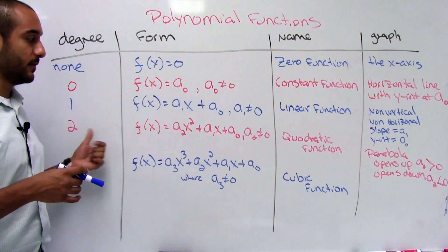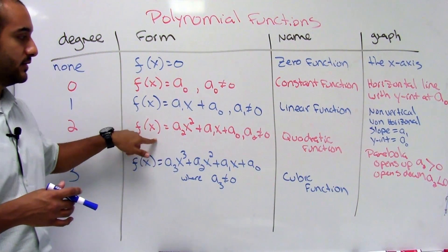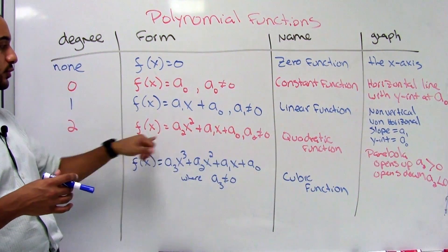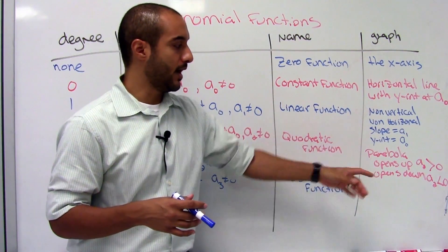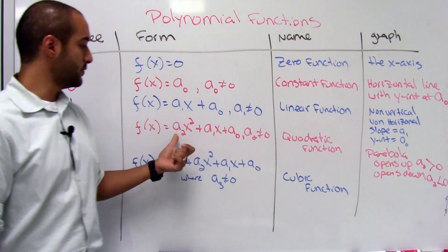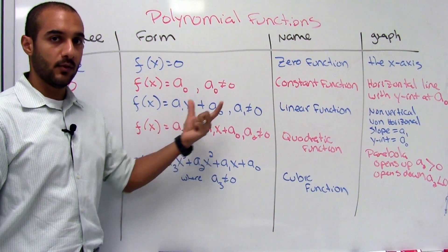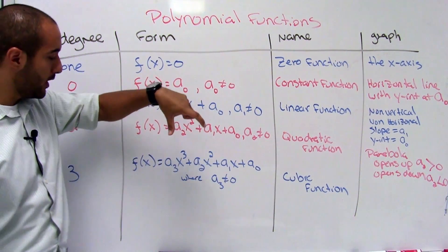The next one we should also be familiar with is our quadratic function, where our quadratic has a degree of two. And we should know that the parabola will open up if a2 is greater than zero. It will open down if a2 is smaller than zero.